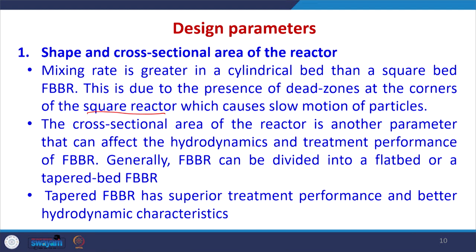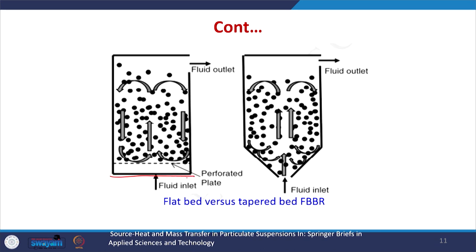The cross-sectional area of the reactor is another parameter that can affect the hydrodynamics and treatment performance of the FBBR. FBBRs can be divided into flat bed or tapered bed FBBRs. In a flat bed FBBR, perforated plates are used and the fluid inlet is from the bottom, fluidizing particles at a certain minimum fluidization velocity. The tapered bed FBBR has superior treatment performance and better hydrodynamic characteristics compared to the flat bed FBBR.